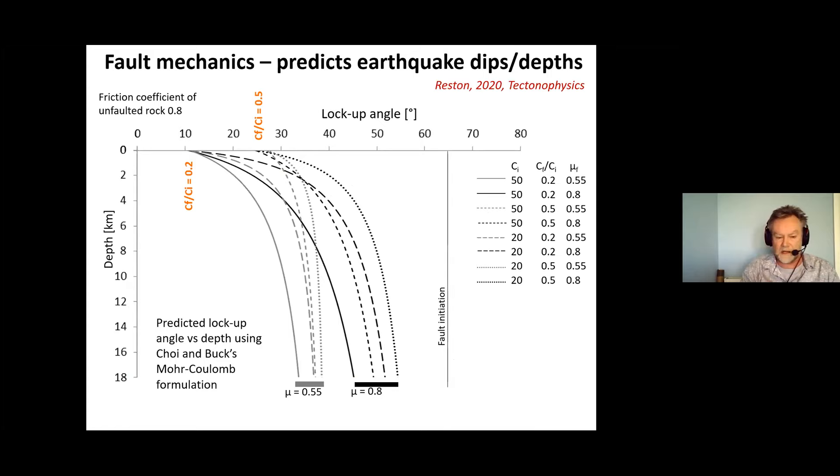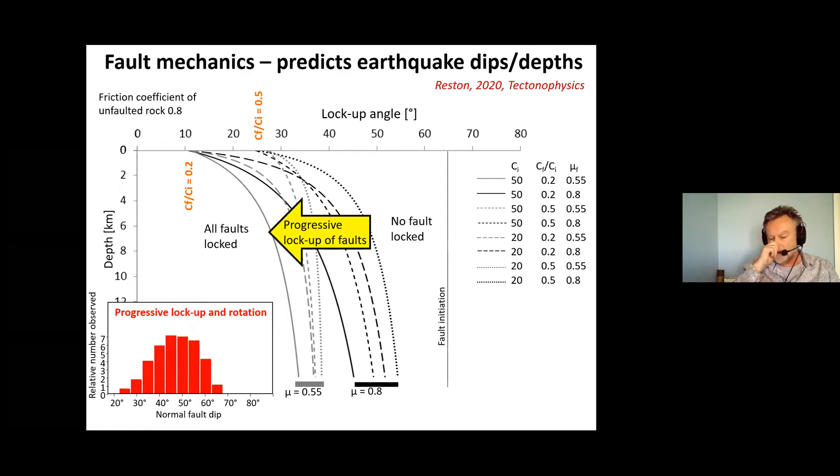Based on Choi and Buck's calculations from their 2012 paper I produced this plot of depth versus the lock-up angle for a variety of friction coefficients for the faults: 0.5, 0.8. The unfaulted friction coefficient was 0.8 and for a variety of intact cohesions and fault cohesion versus intact cohesion ratios. So very much fairly strong faults here and we can see that under more Coulomb conditions we can get slip at very low angles with the angle being determined fundamentally by the Coulomb ratio, the cohesion ratio.